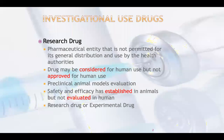So what they do — all the preclinical animal models and evaluation have to be studied. Then safety and efficacy have been established in animals, but not evaluated in humans. Then these drugs have to go for investigational use on humans. So then they are known as research drugs or experimental drugs.